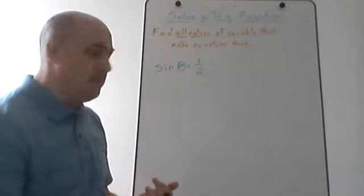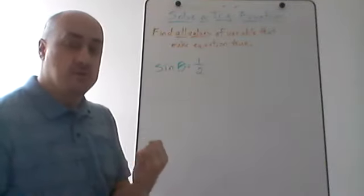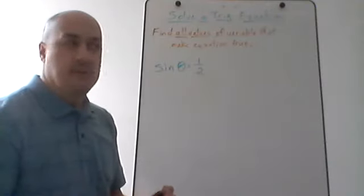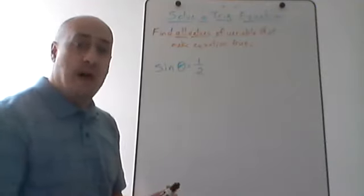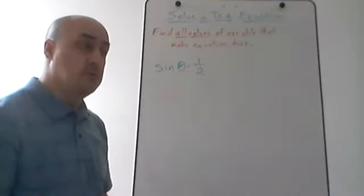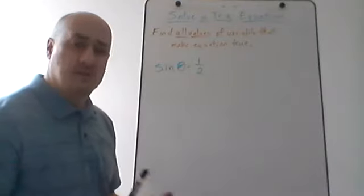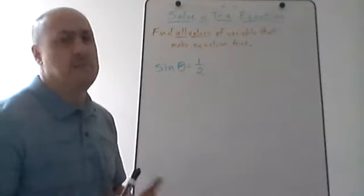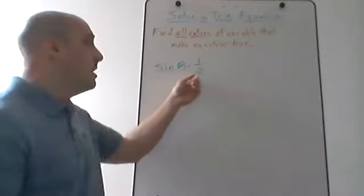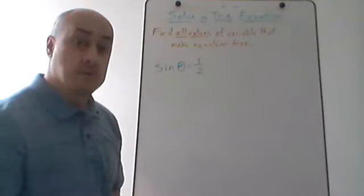For most types of equations, that's not that hard. For a linear equation, there's only one value of the variable that makes it true. For a quadratic equation with x squared, we might have two solutions. For exponential and logarithmic equations, generally we get one solution. But for trigonometric equations, generally we get an infinite number of solutions.